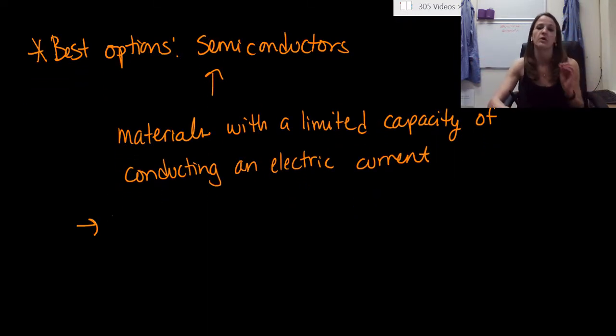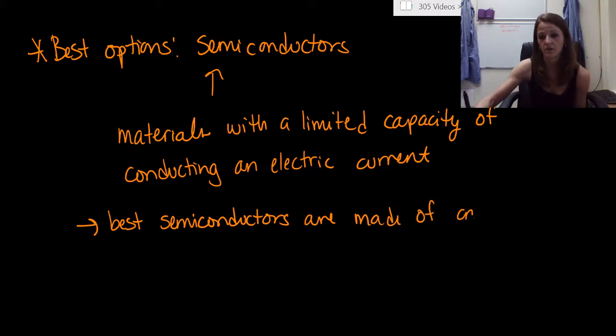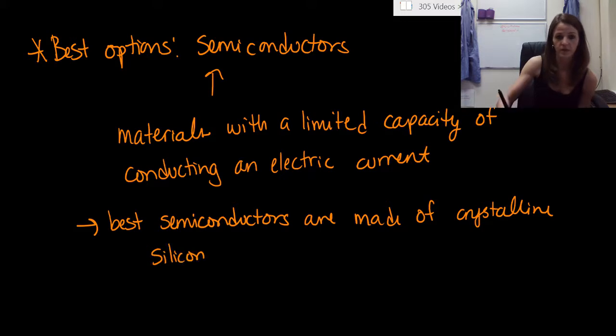So now, our best option, if we're going to really focus in on semiconductors, our best semiconductors are made of crystalline silicon. So SI, we just use crystalline silicon.